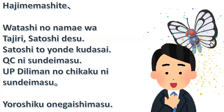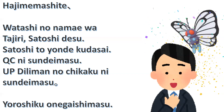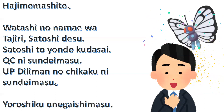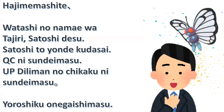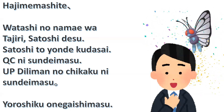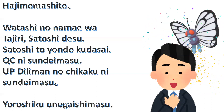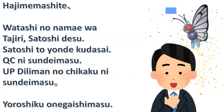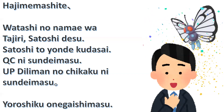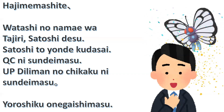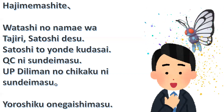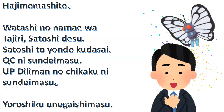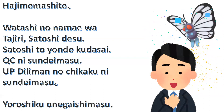Next is your city followed by ni sunde imasu. Sunde imasu means living — the current place where you live right now. You can use the city you live in, for example Manila, Makati, Tokyo. We also have: yupi diliman no chikaku ni sunde imasu. Chikaku here is an adverb meaning near, so: I live near yupi diliman.